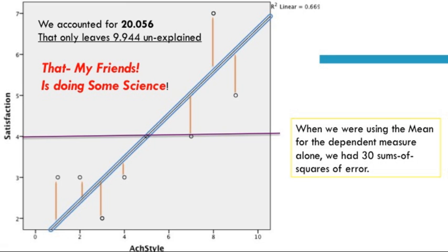All right, my friends, let's get to the central teaching point here. The purpose of science is to explain that which was previously unknown. The student satisfaction by itself told us that there was 30 sums of squares and that there was 30 units that needed to be explained. It just so happened we got really lucky or were really bright, and we found out that achievement style explained 20.056 of that 30. That's magnificent. The amount of error that we have left over is 9.944. So only in science can we quantify our error, our ignorance. It's a beautiful thing.